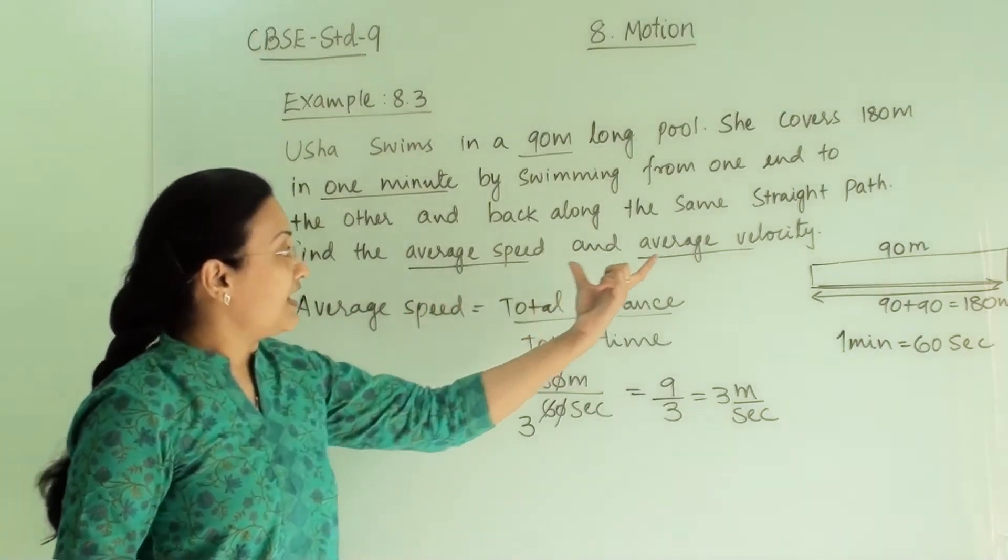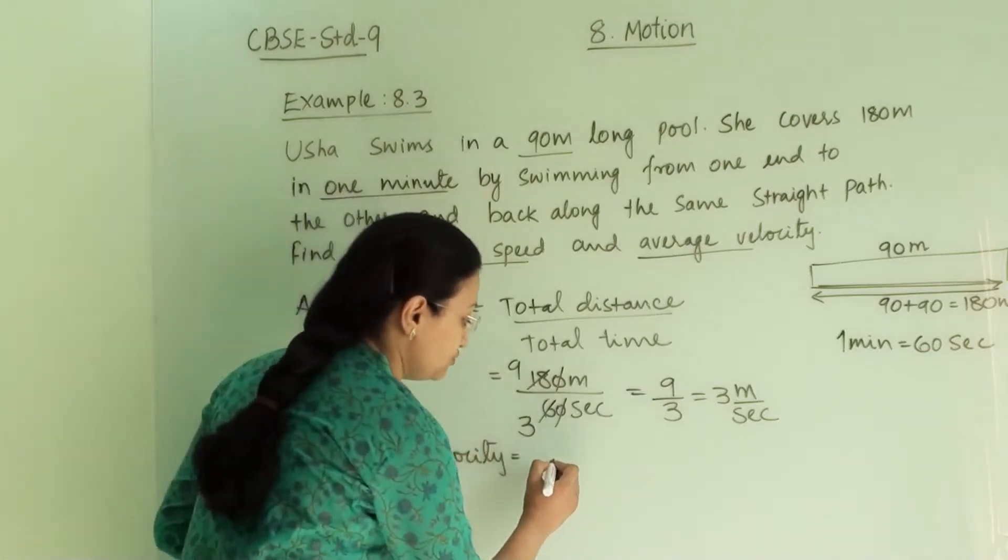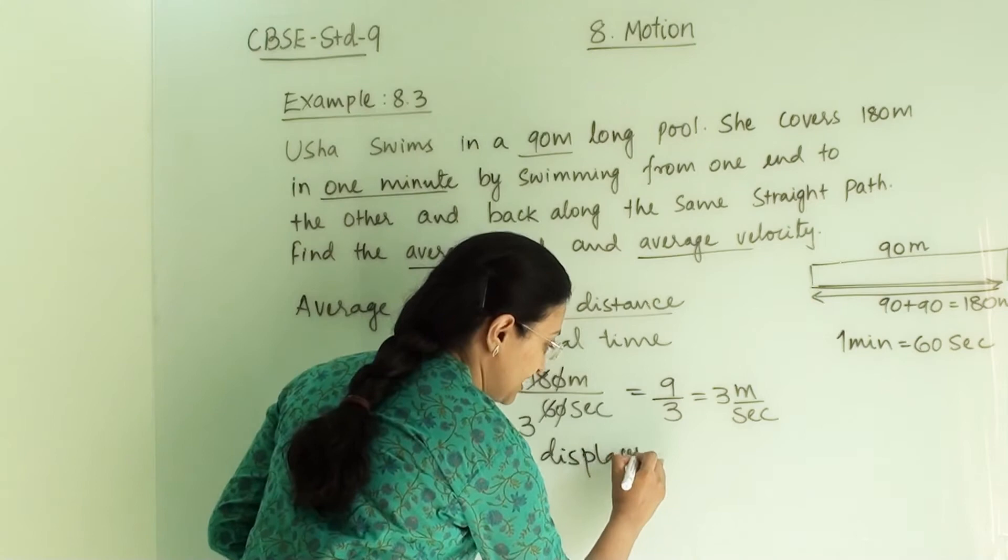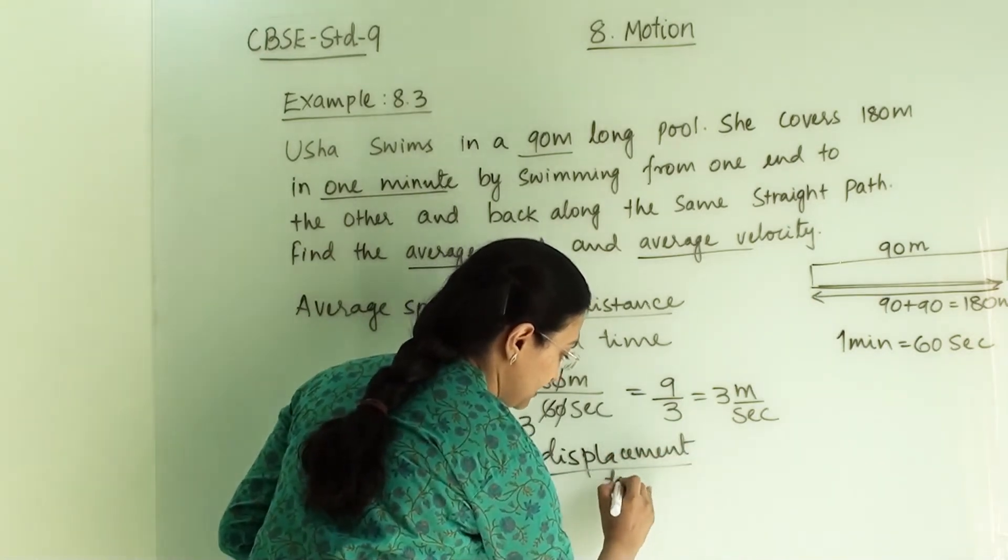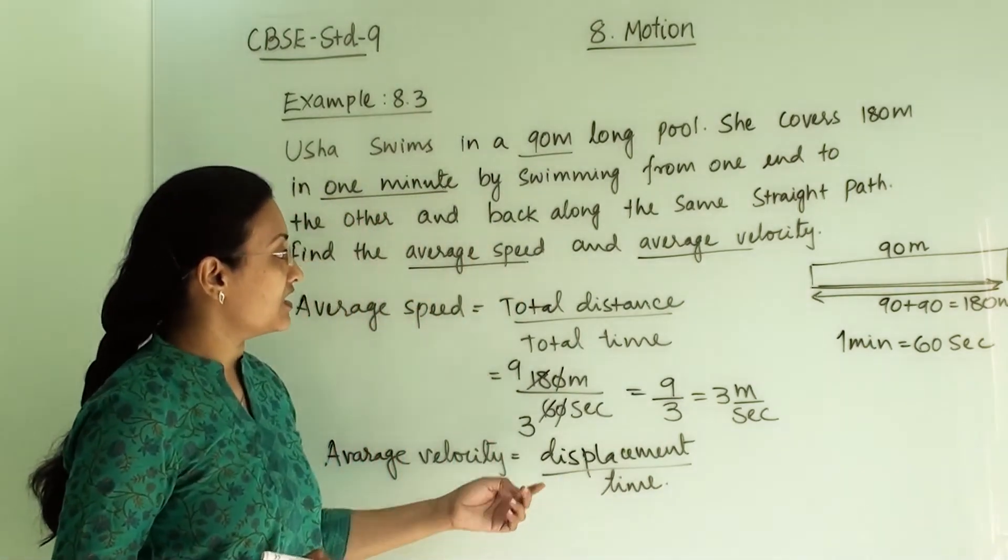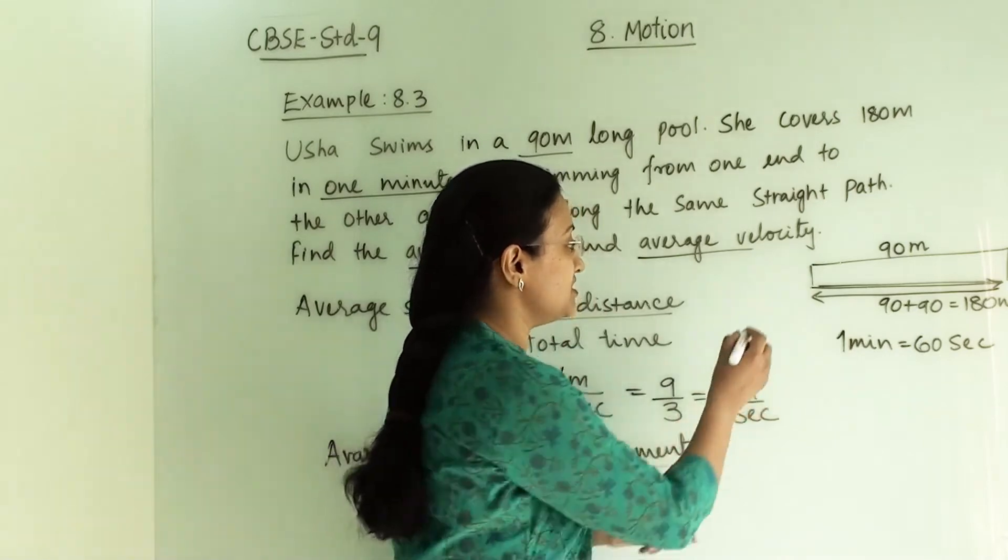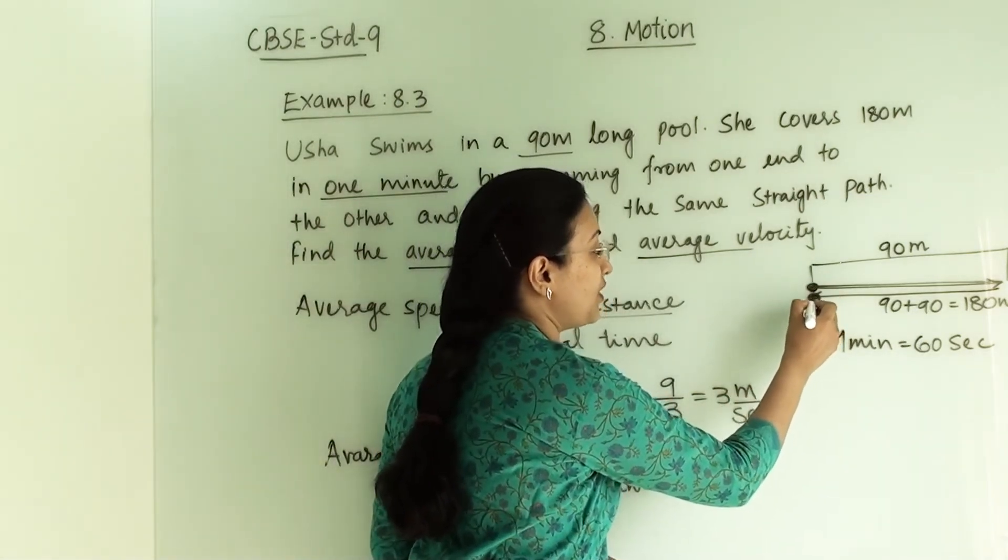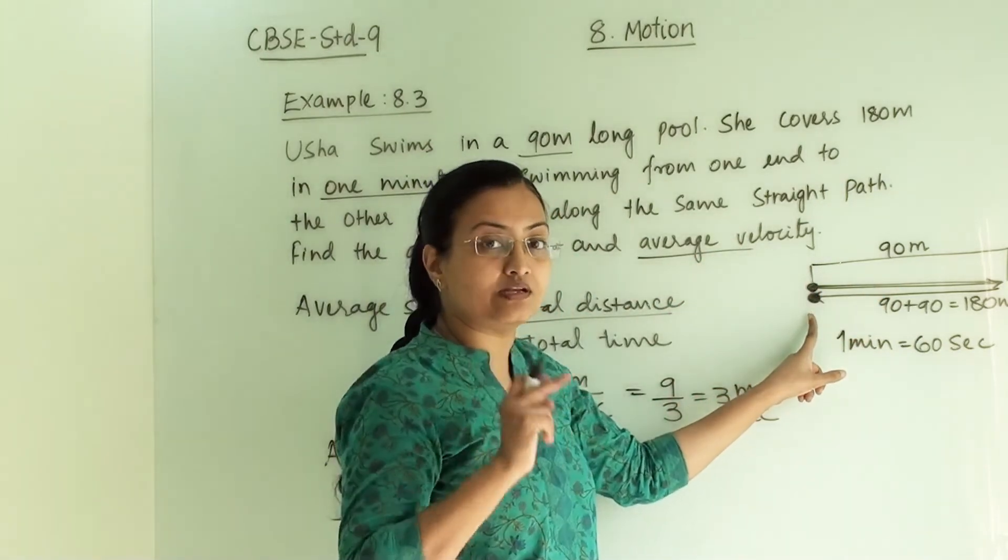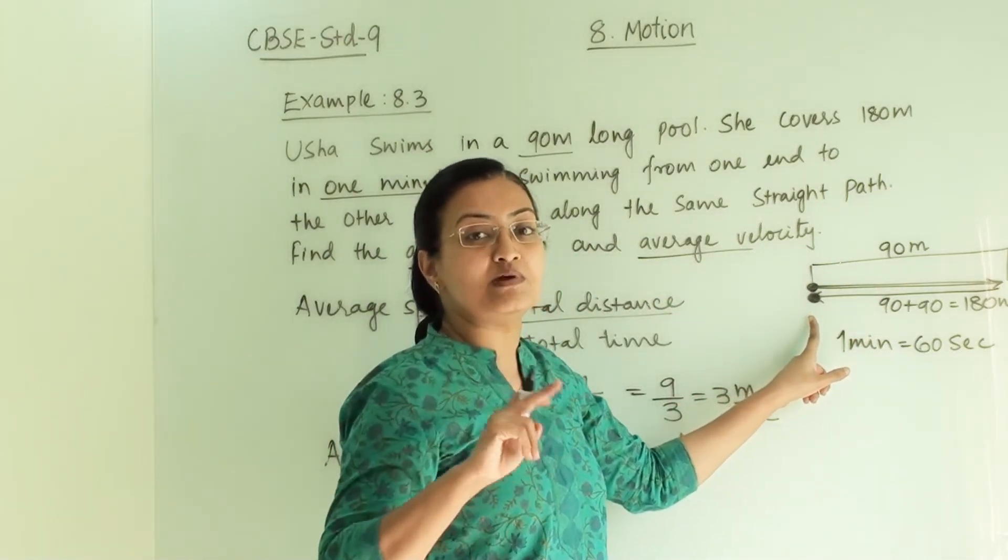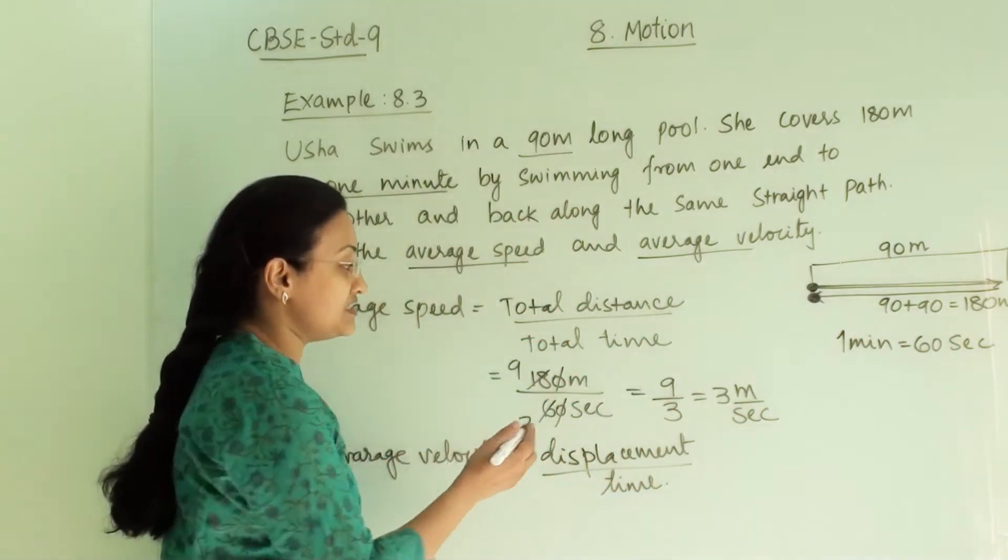Now let us find out the average velocity. Average velocity equals displacement divided by time taken. What is displacement here? Even though she has covered 180 meters, her final point and initial point is the same. Because from where she started, she came back to that point again. So displacement is 0.